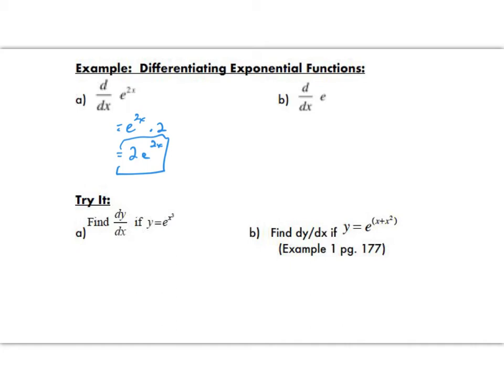Now this is a trick question in part b. The derivative of just e, that is going to be 0, and the reason why is because e is a constant and the derivative of any constant number of course works out to be 0.